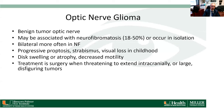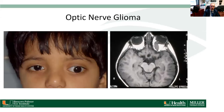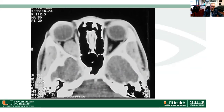Optic nerve gliomas can present with slow progressive painless proptosis. They may be associated with neurofibromatosis or occur in isolation. They often cause strabismus and visual loss, and on exam there may be swelling of the optic disc and decreased motility. Treatment is usually observation unless the tumors are threatening to extend intracranially or involve the opposite optic nerve, at which point they are usually excised. On MRI you can see this fusiform-shaped tumor of the optic nerve.